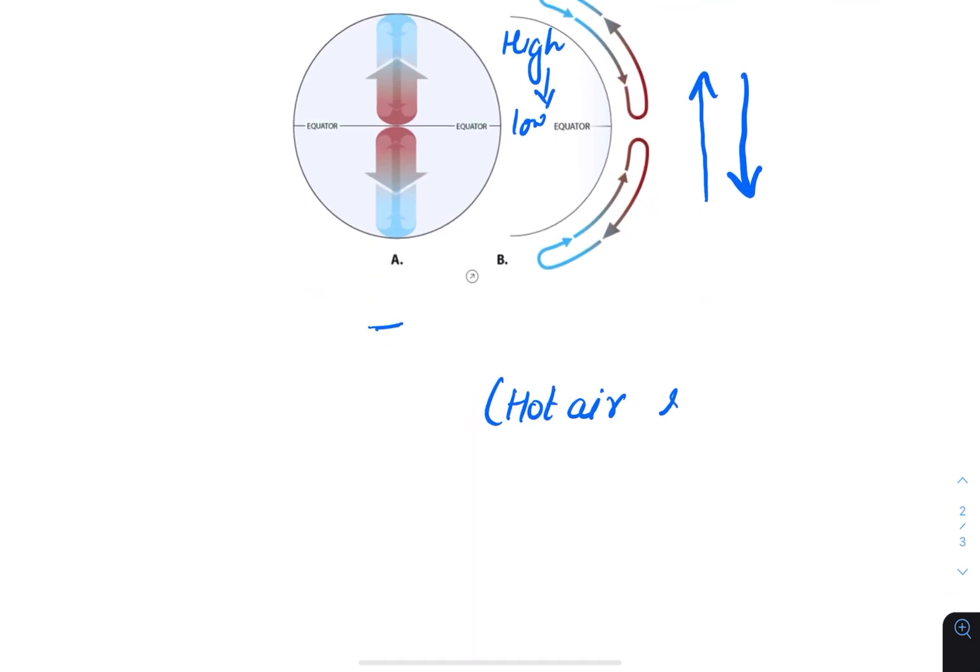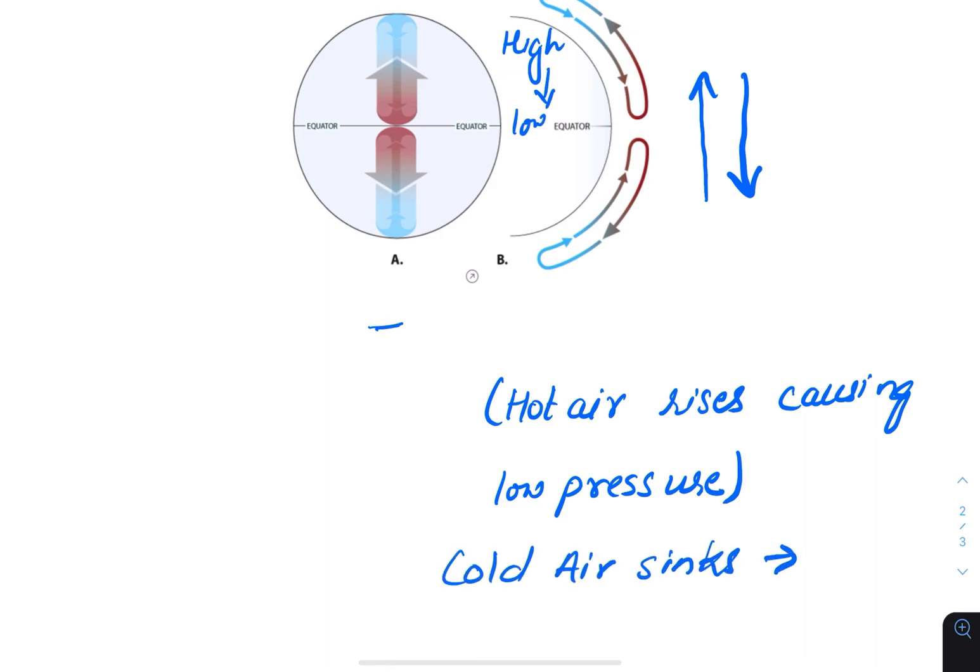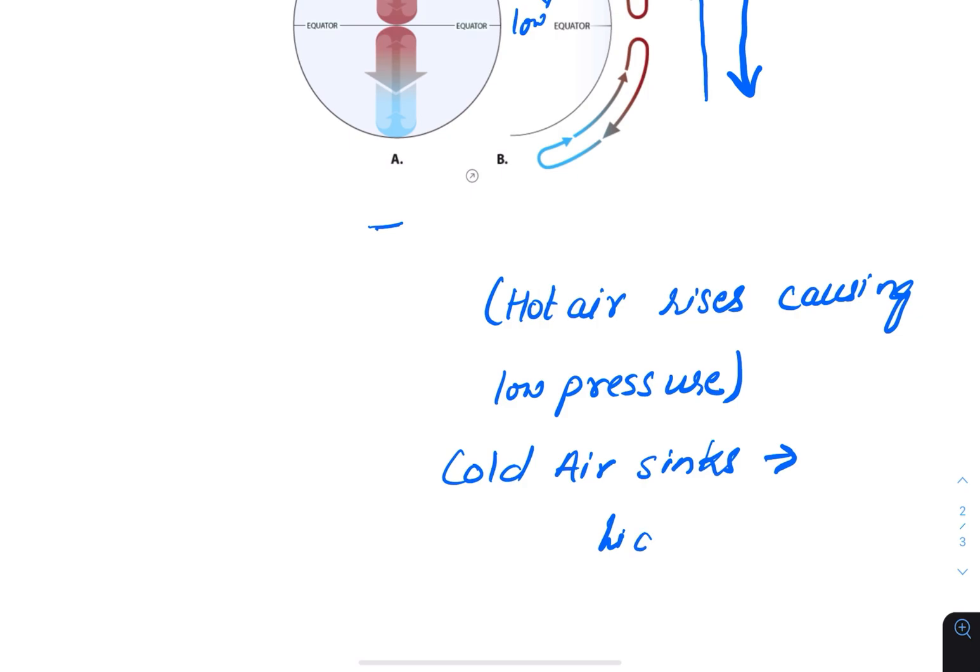These winds are formed when hot air rises and reaches the equator where it is pulled towards the poles, cooling in the process. These winds are used by sailors. Christopher Columbus discovered America with the help of trade winds.